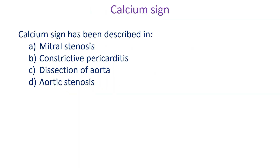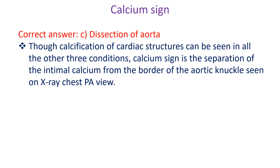Calcium sign has been described in: A. Mitral stenosis. B. Constrictive pericarditis. C. Dissection of aorta. D. Aortic stenosis. Correct answer: C. Dissection of aorta. Though calcification of cardiac structures can be seen in all the other three conditions, calcium sign is the separation of the intimal calcium from the border of the aortic knuckle seen on X-ray chest PA view.